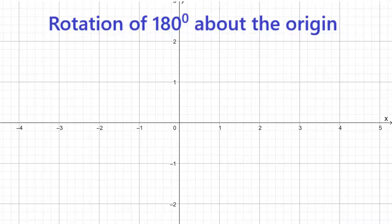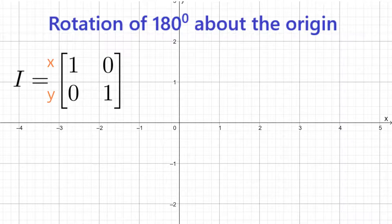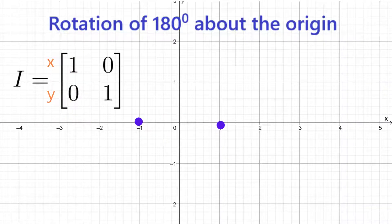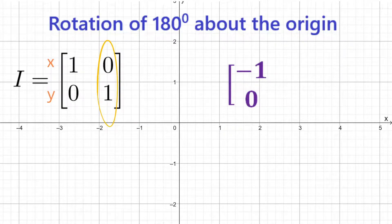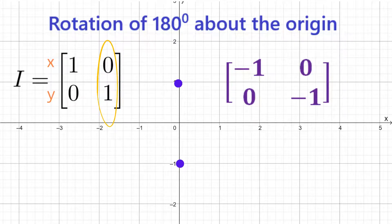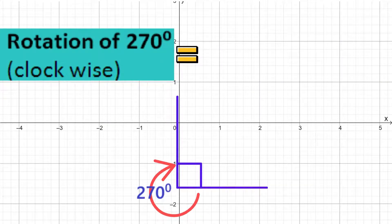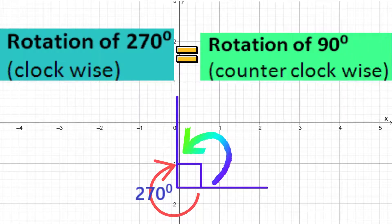To get the matrix for the 180 degrees rotation, we go back to the identity matrix. The values in the first column represent the point (1, 0). Rotate this point 180 degrees clockwise or anticlockwise and we'll end up at (-1, 0), so the first column in the transformation matrix will be (-1, 0). The second column represents (0, 1). Rotate (0, 1) by 180 degrees and we'll end up at (0, -1), so the second column in the transformation matrix is (0, -1).